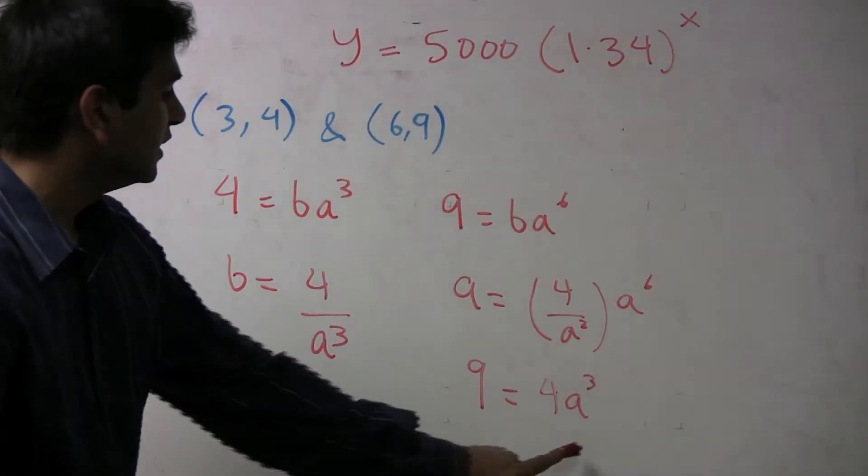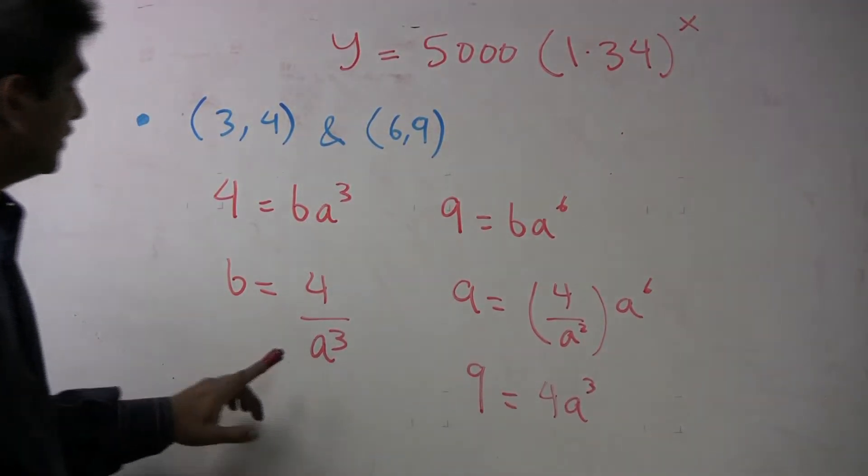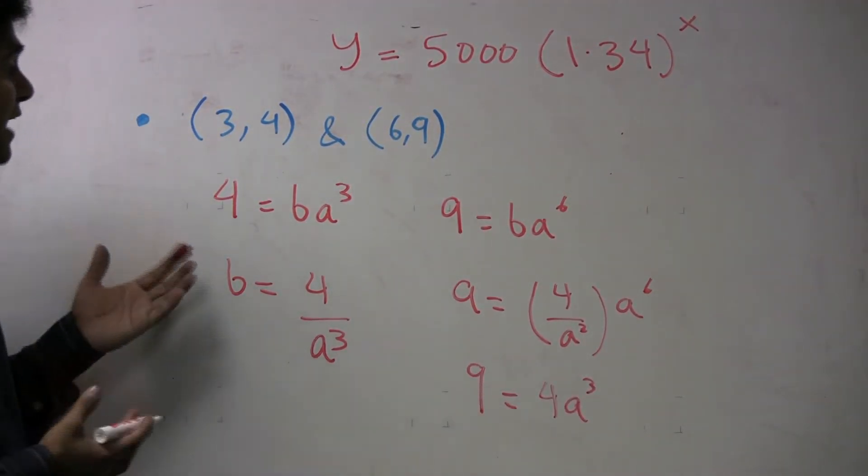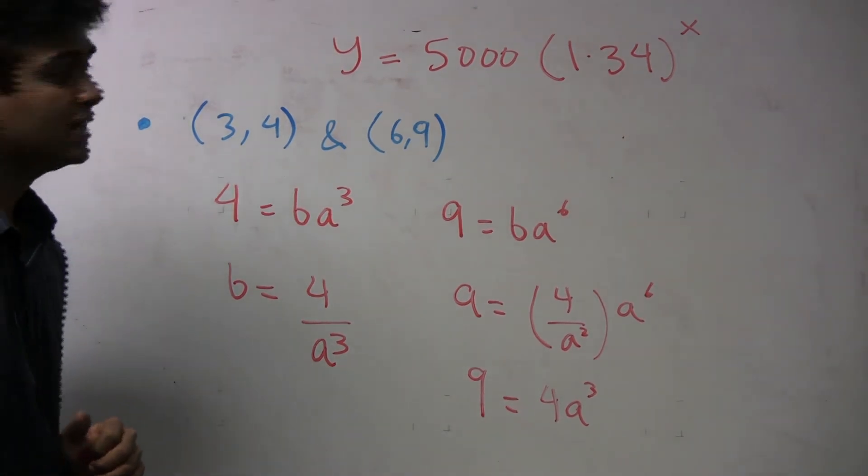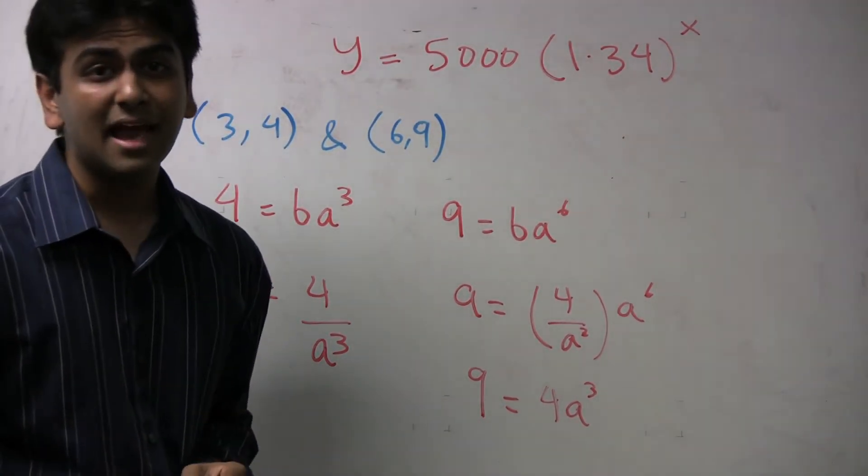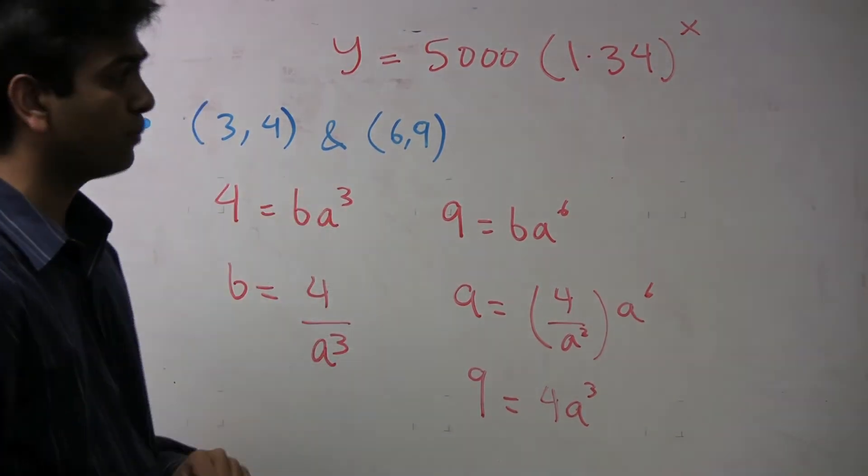From here, you can just pull out a calculator, compute what a is, and then use that to compute what b is, and that will be your exponential function. You can just plug the b and the a into y equals bax, and that will give you the model that has these two points in it.